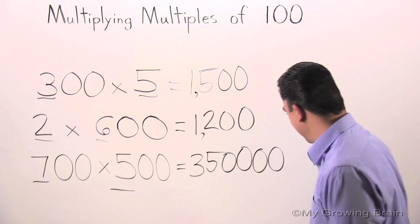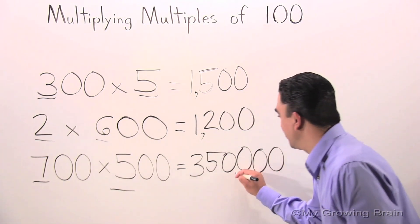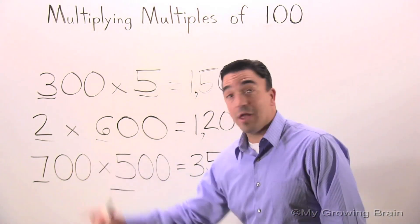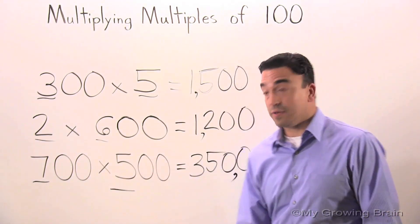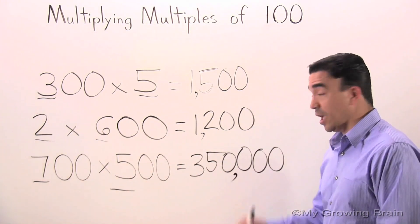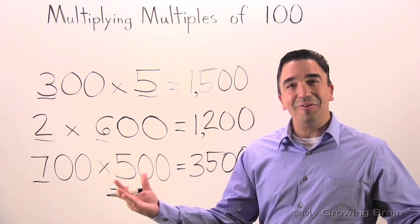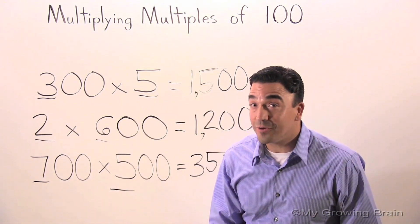Don't forget the comma after three digits. Now, 700 times 500 is 350,000. This concludes our lesson on multiplying multiples of 100.